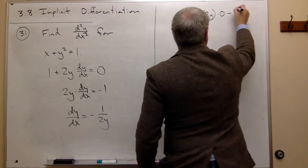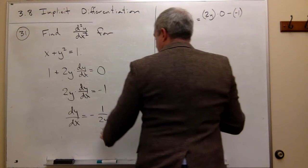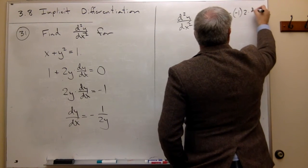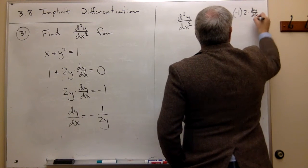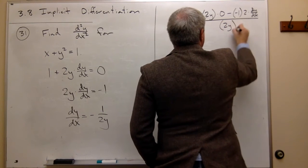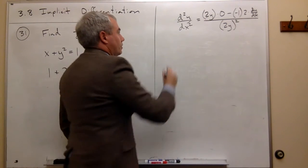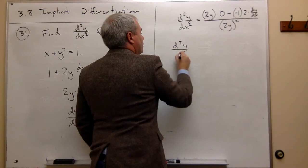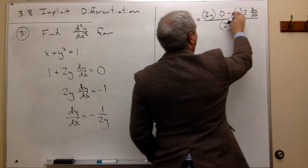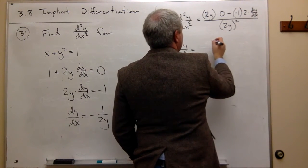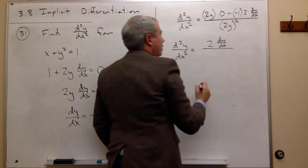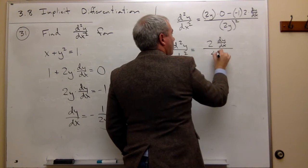minus the top, which is negative 1, times the derivative of 2y. But the derivative of 2y is 2 times dy dx all over the bottom, which is 2y, squared. OK, let's simplify this a little bit. I get the d squared y over dx squared is equal to, on top, I have positive 2 dy dx, 2 dy dx over 4y squared.